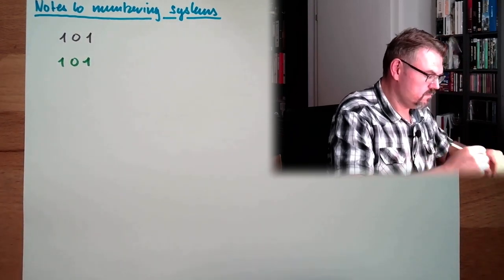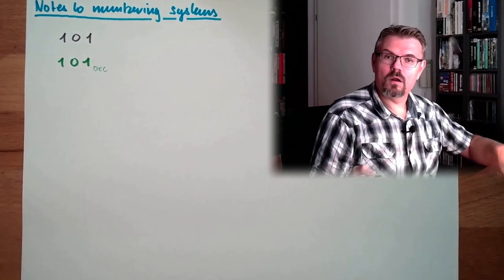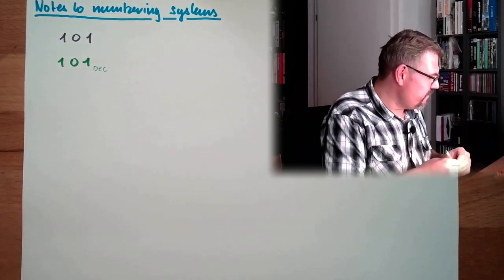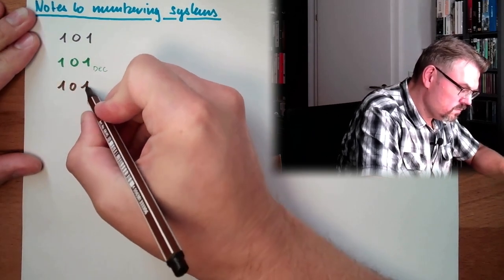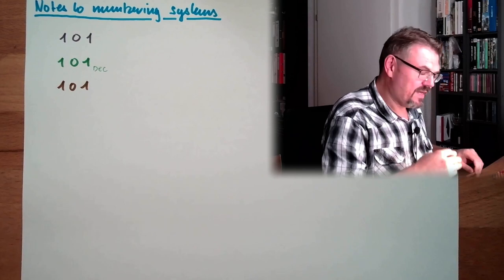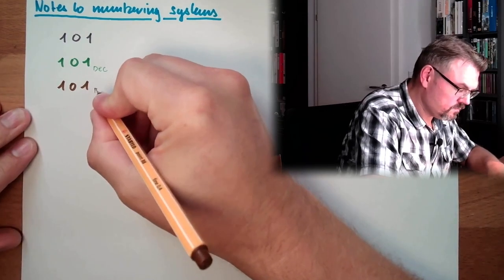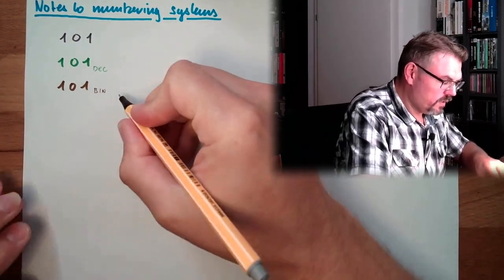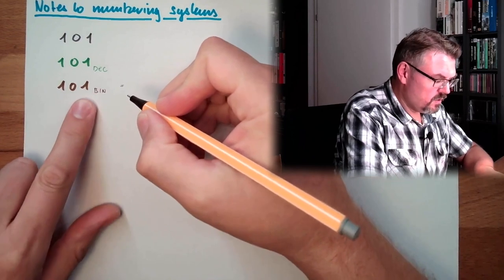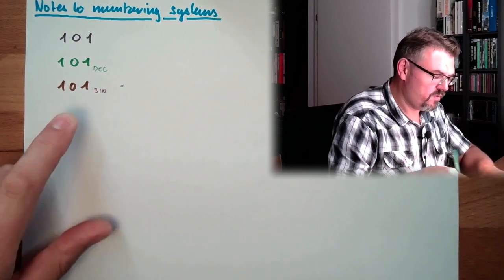If 101 is decimal, then it's 101. If the 101 is interpreted as binary, this means actually, what is its decimal? It's 1, 2, 4, and 1 is 5.